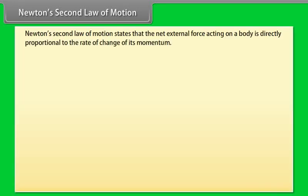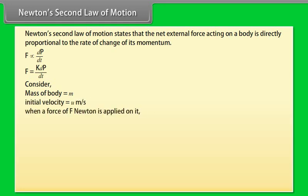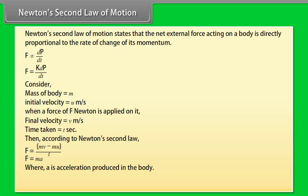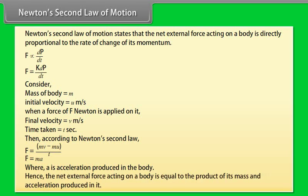Newton's second law of motion states that the net external force acting on a body is directly proportional to the rate of change of its momentum. Consider a body of mass m initially moving with velocity u m/s. When a force F (Newtons) is applied, its velocity becomes v m/s after time t seconds. Then, according to Newton's second law: F = (mv − mu) / t = ma, where a is the acceleration produced. Hence, the net external force equals the product of mass and acceleration.